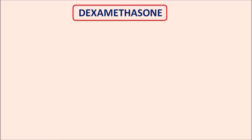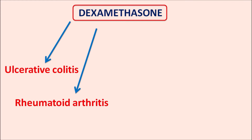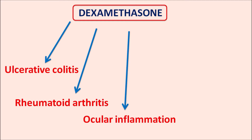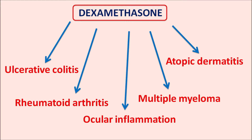Dexamethasone can be used in various conditions as an anti-inflammatory agent as well as an immunosuppressant. It is indicated for treatment of ulcerative colitis, rheumatoid arthritis, ocular inflammatory disorders such as allergic conjunctivitis, cancers such as multiple myeloma, and allergic conditions such as atopic dermatitis.